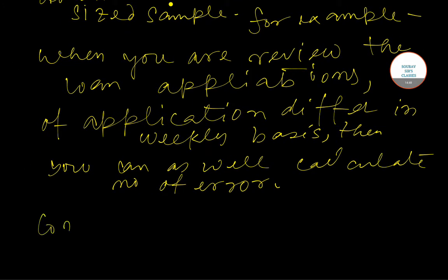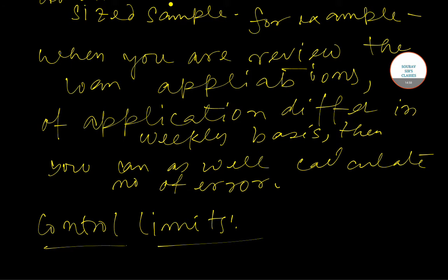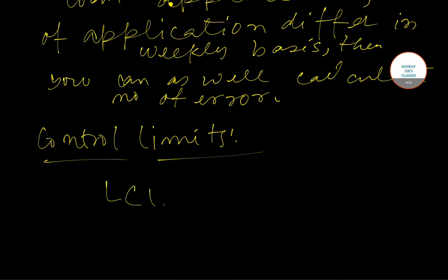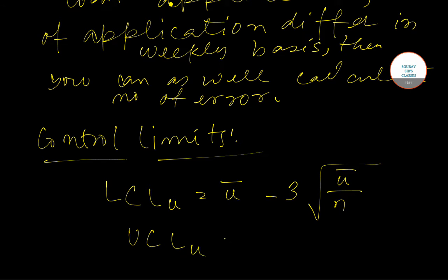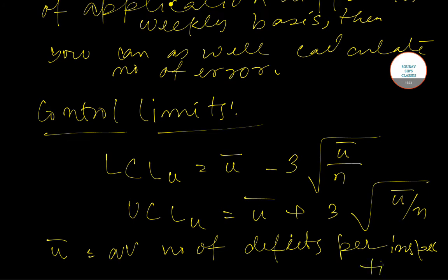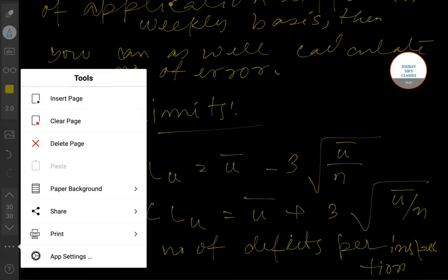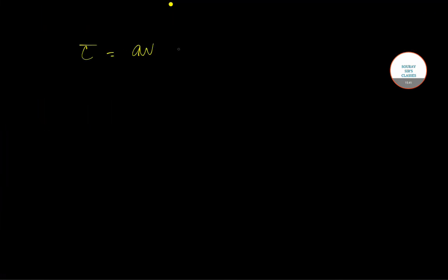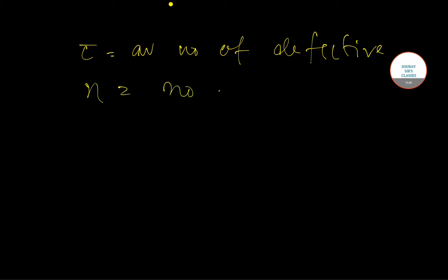Now we will talk about the control limits of U-chart. LCL_U equals U-bar minus 3 times the square root of U-bar divided by N. And UCL_U equals U-bar plus 3 times the square root of U-bar divided by N. Here, U-bar is the average number of defects per inspection, C is the average number of defectives, and N is the number of inspection units.